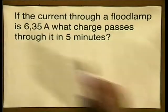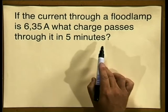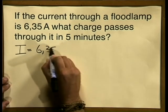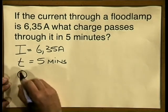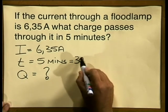How did you find that first problem? Now let's try another problem. If the current through a flood lamp is 6.35 amperes, what charge passes through it in 5 minutes? Let's organize our information: current i is equal to 6.35 amperes, time is in minutes, and q, the charge, is what we're trying to find out. We must convert 5 minutes into seconds by multiplying by 60, giving a total of 300 seconds.